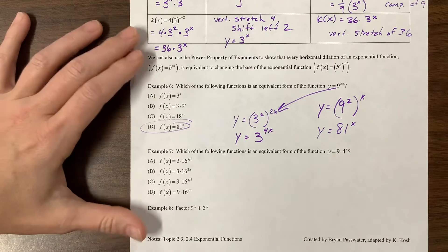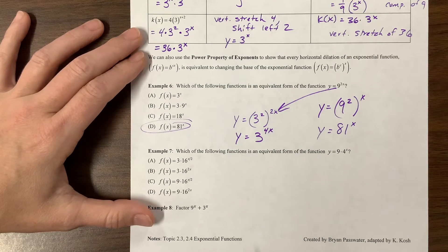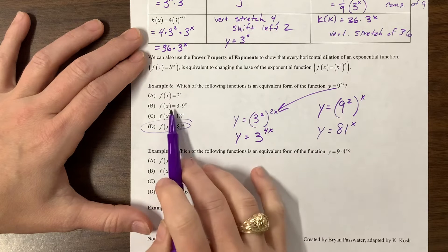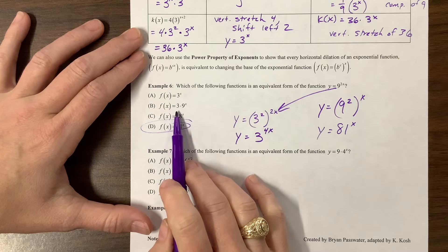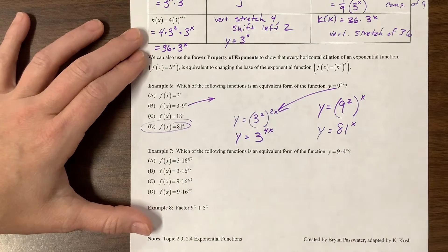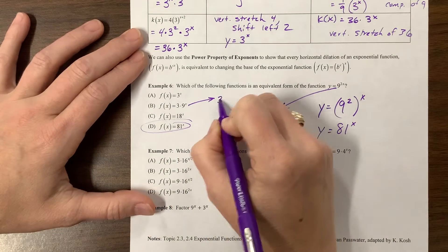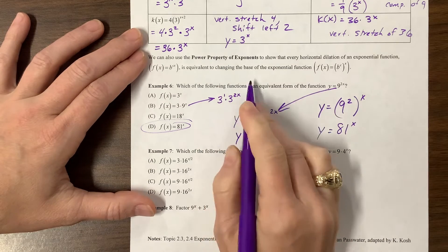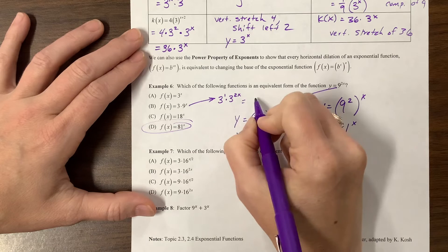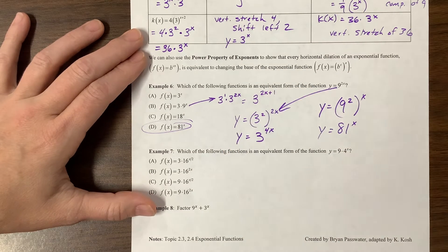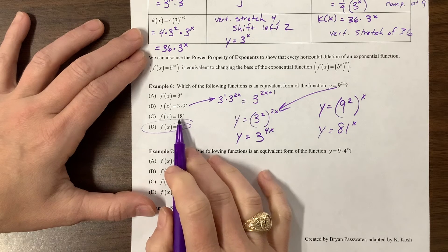Because you could also have rewritten this as y is equal to 3^2 to the 2x, which would then be y is equal to 3 to the 2 times 2x is 2 times 2 is 4, to the 4x. So that's also equivalent. Is that an answer choice? No. What about this one? 9^x times 3? No.